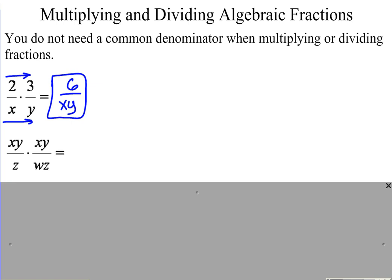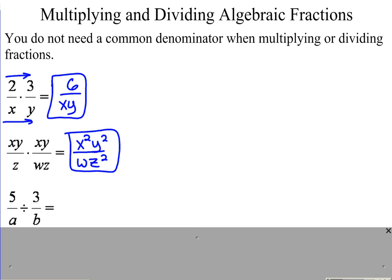xy over z times xy over wz. Multiply straight across. x times x, x squared. y times y, y squared. In the bottom, z times wz is wz squared. Nothing can be simplified. We're done.